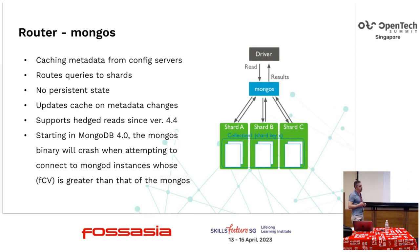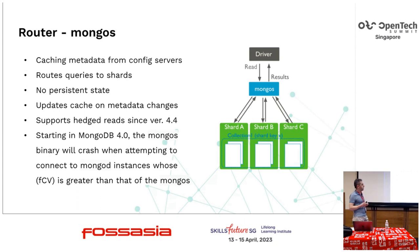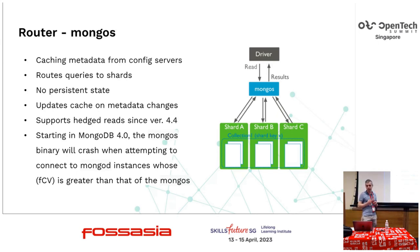The last piece of the sharded cluster is MongoS — the router. It has no persistent state, keeps all metadata in memory, and routes queries to the appropriate shard based on metadata from the config server. Since version 4.4, MongoS supports hedged reads, which means that when reading data from a secondary node, it distributes the query to secondary nodes in the cluster, and whichever returns the response fastest is returned to the client via the driver.